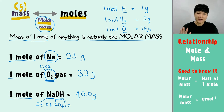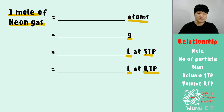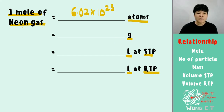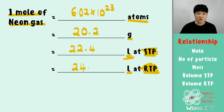Let's do a quick exercise. If we have 1 mole of neon gas, what is the number of atoms, mass in grams, volume at STP, and volume at RTP? 1 mole of neon gas equals 6.02 times 10 to the power of 23 atoms. The molar mass of neon is 20.2 grams. 1 mole of neon gas at STP equals 22.4 liters. 1 mole of neon gas at RTP equals 24 liters.